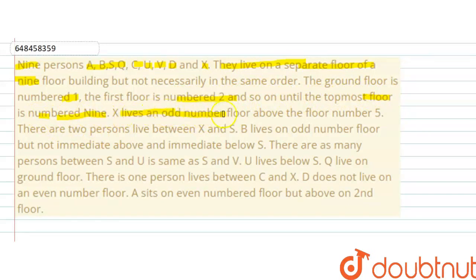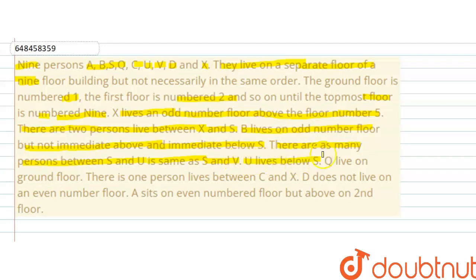The clues are: X lives on an odd number floor above floor number 5. There are two persons living between X and S. B lives on odd number floors but not immediately above or immediately below S. There are as many persons between S and U as between S and V. U lives below S. Q lives on the ground floor. There is one person living between C and X. D does not live on an even number floor. A sits on an even number floor but above the second floor.